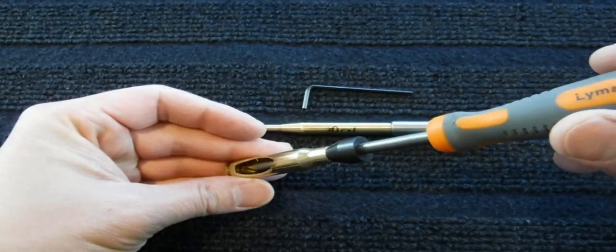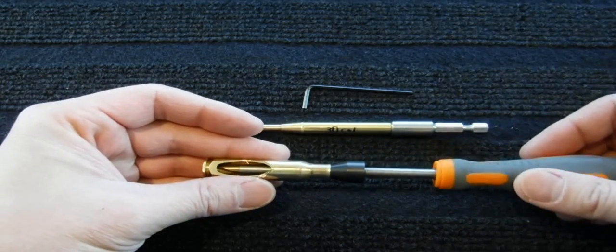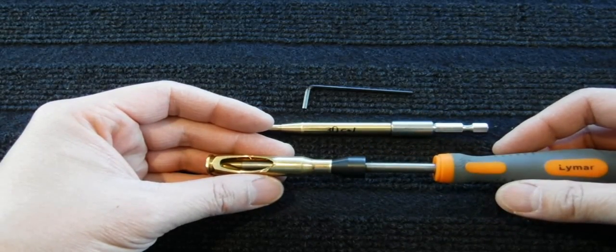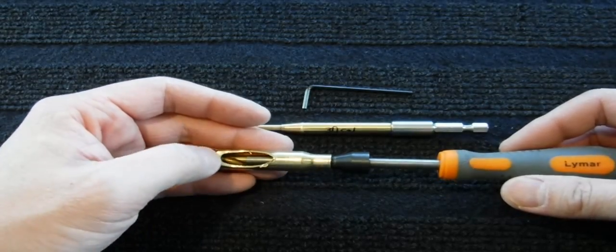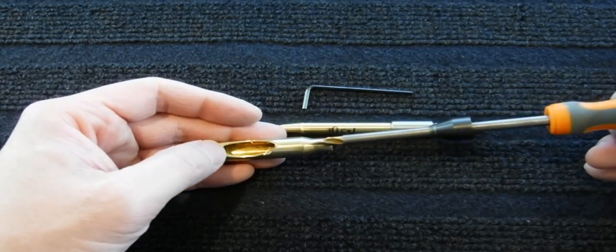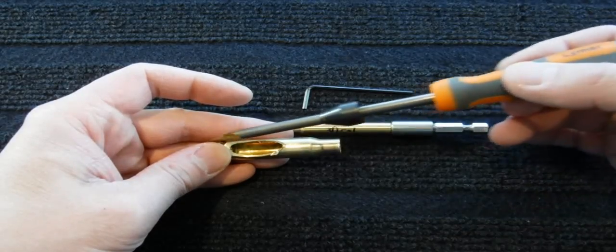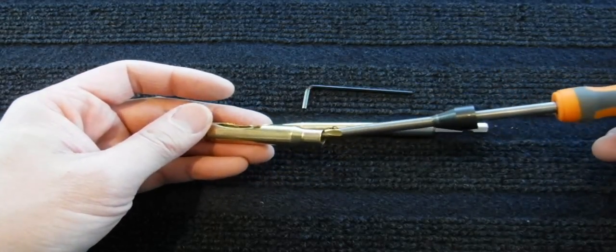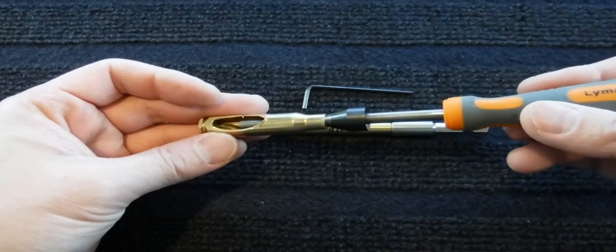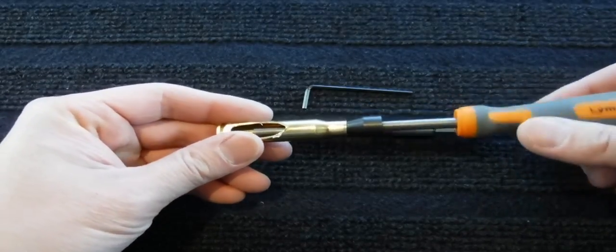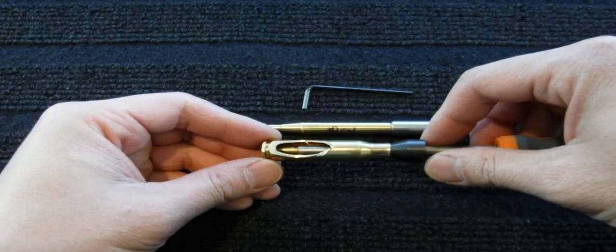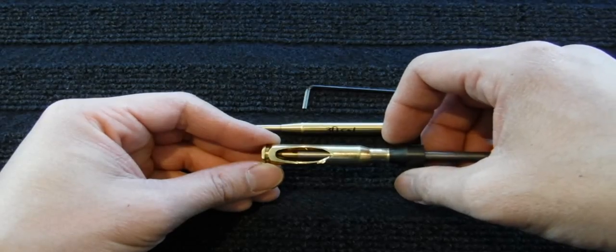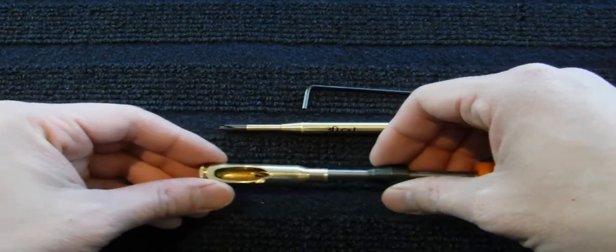It can take out maybe too much material or too little material in terms of where the flash hole is based on your cartridge overall length. If one cartridge is longer than the other, it will index incorrectly and may not actually do any deburring if a case is longer or do too much deburring if the case is shorter.